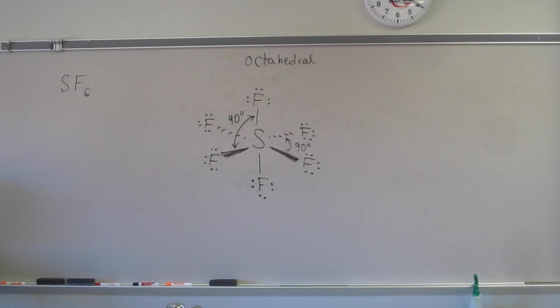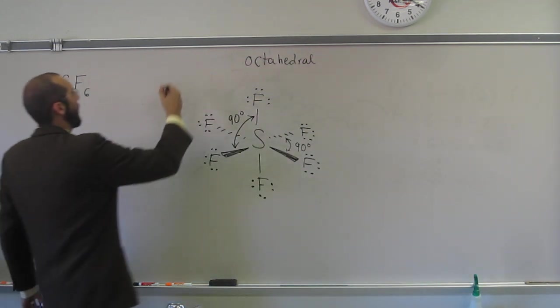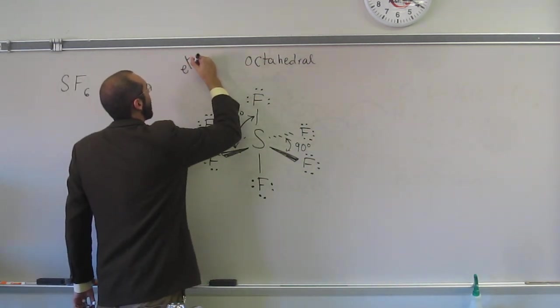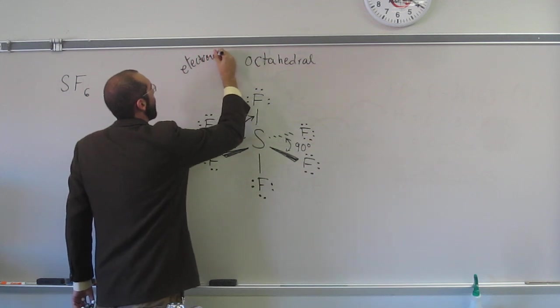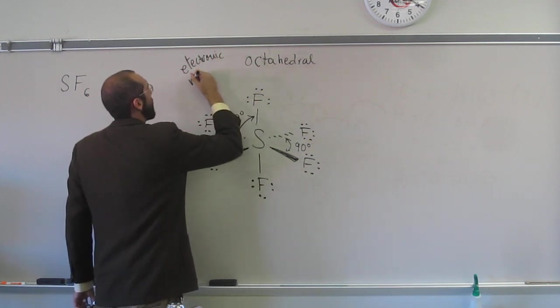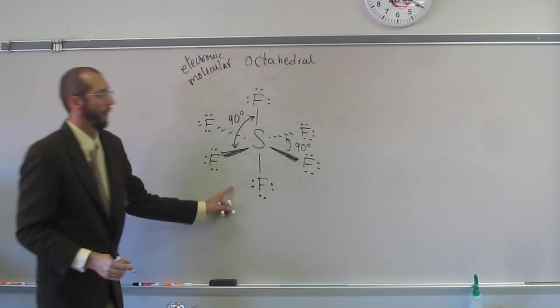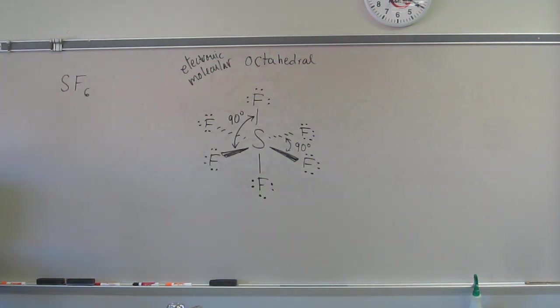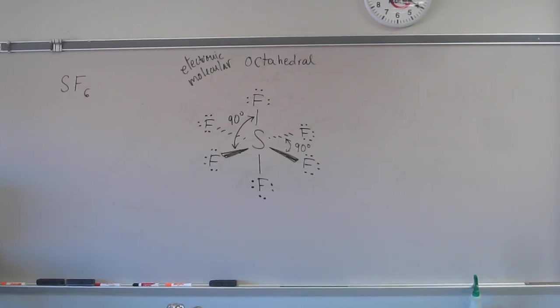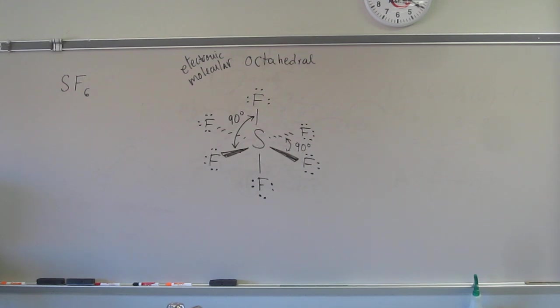So again, remember, this is octahedral both electronically and molecularly. Are there any questions on this one? Again, these period three and below can expand their valence. So that's why it's doing it. So whenever you see something that looks a little weird, it's probably because it's expanding its valence.